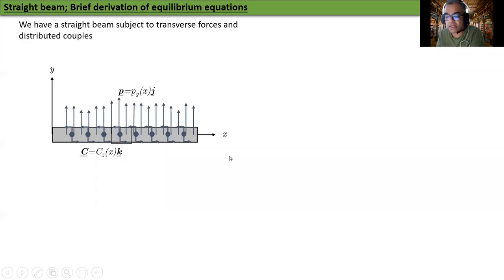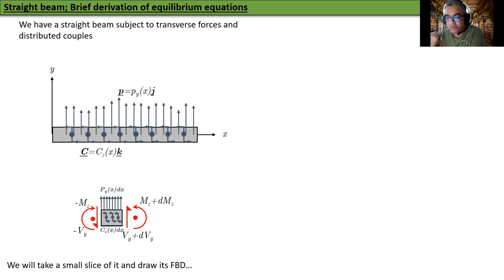Now we are going to take a chunk of it and draw its free body diagram. You have probably seen this in your strength of materials. Here is a chunk and here are the forces and couples on it. You have the external force PY DX, external couple CZ DX. And then you have the internal shear force on the positive face VY plus DVY, and the internal moment on the positive face MZ plus DMZ, and the corresponding things on the negative face.